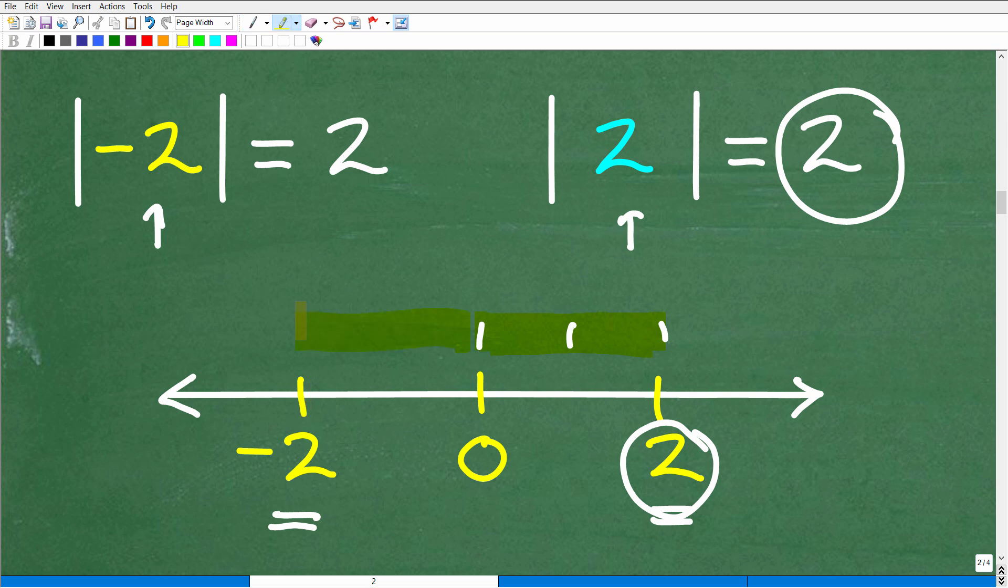All right, how about negative 2? Well, if you look here, it's the same distance, right? So from here to here, it's the same distance. So this is 2 units away from 0, and negative 2 is also 2 units away from 0. So negative 2, again, right here, is 2 units away from 0. So that is the definition of absolute value. That's what you really need to understand, and now you know why.